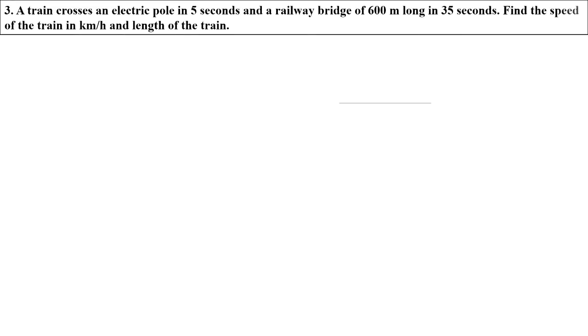The question is: A train crosses an electric pole in five seconds and a railway bridge of 600 meters long in 35 seconds. Find the speed of the train in kilometers per hour and the length of the train.